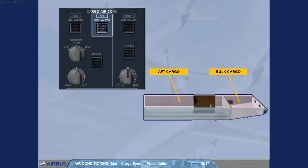As the aft and bulk cargo compartments on the long range are separated, the aft compartment has its own Isol valve push-button switch, which has the same function as for the bulk cargo compartment. Note: there are no heating and cooling options.